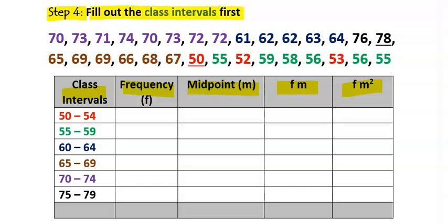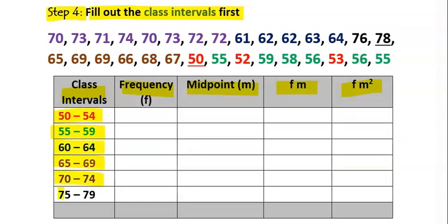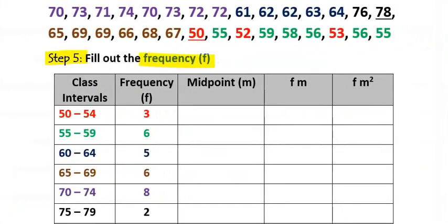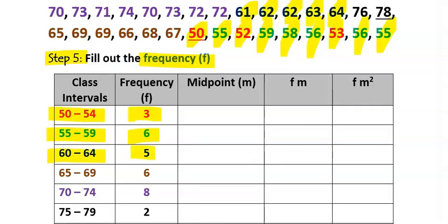Step five: fill out the class intervals first, then fill in the frequencies. For 50 to 54, we count three values, so frequency is 3. From 55 to 59, we count six values, so frequency is 6. From 60 to 64, we count five values, so frequency is 5.